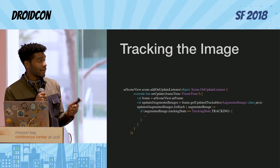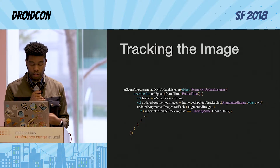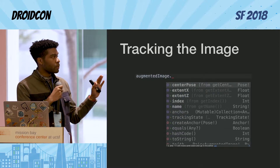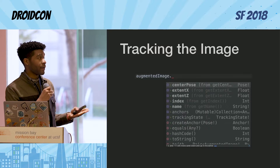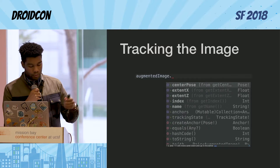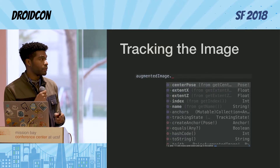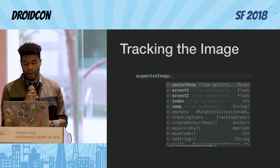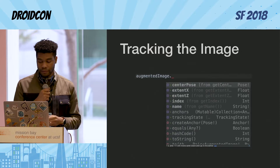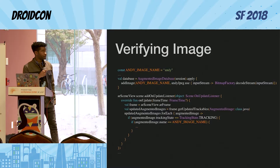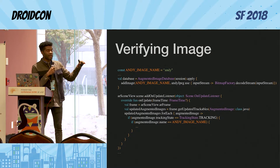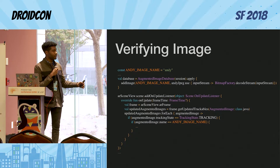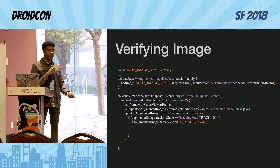Each augmented image in this list is going to have a little bit more information for you to use if you want to do any type of further processing. The name attribute is probably going to be one of the most important attributes when using this augmented image object, mainly because it acts as an identifier. It doesn't have an ID or anything, so you're going to use the name as an identifier when verifying your image. Whatever name you use to add the image is going to be the one that is returned inside of that ArrayList.